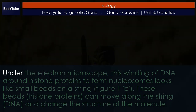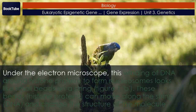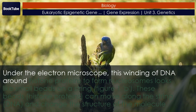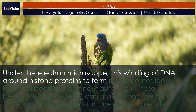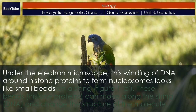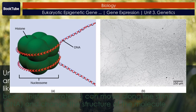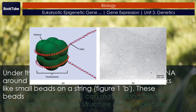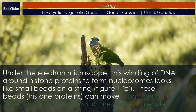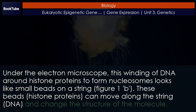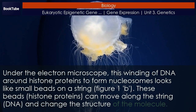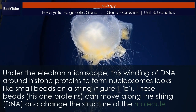Under the electron microscope, this winding of DNA around histone proteins to form nucleosomes looks like small beads on a string. These beads — histone proteins — can move along the string of DNA and change the structure of the molecule.